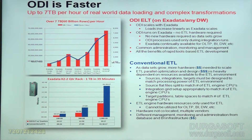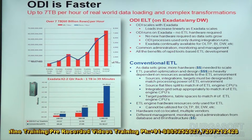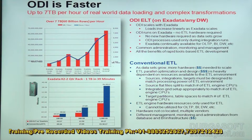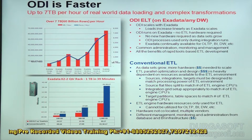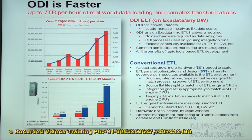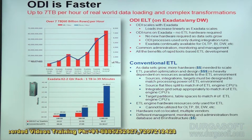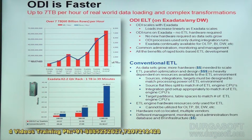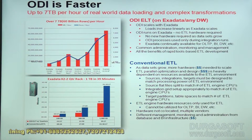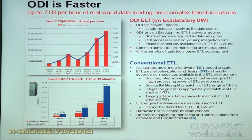ODI is faster — up to 70 TB per hour of real-world data loading and complex transformation. ODI ELT on Exadata scales linearly as Exadata scales. ODI runs on Exadata with no separate ETL hardware required. As data grows, ODI processes are used only during integration runs, while Exadata remains continually available for OLTP, business intelligence, data warehouse, and other workloads with common administration, monitoring, and management.